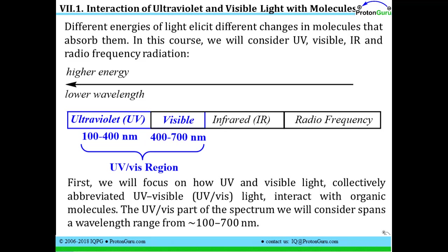In this Organic II course, we're going to talk about how organic molecules interact with ultraviolet, visible, infrared, and radio frequency radiation. So I just want to start off with a quick review of the electromagnetic spectrum. The higher energy end of these wavelengths of light are the ultraviolet and visible wavelengths, and this region spans from about 100 nanometers to about 700 nanometers.